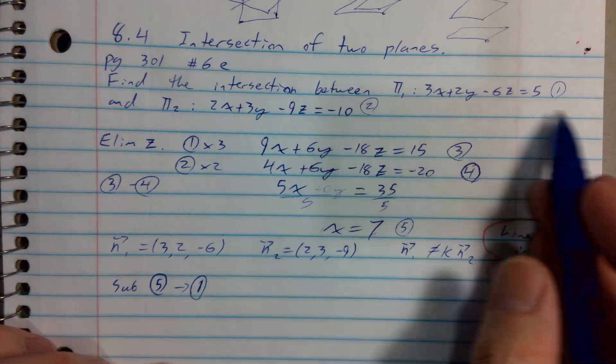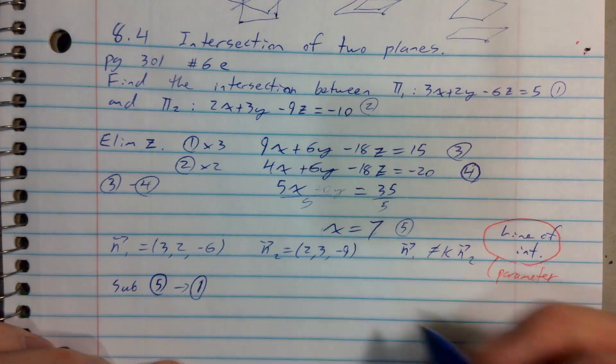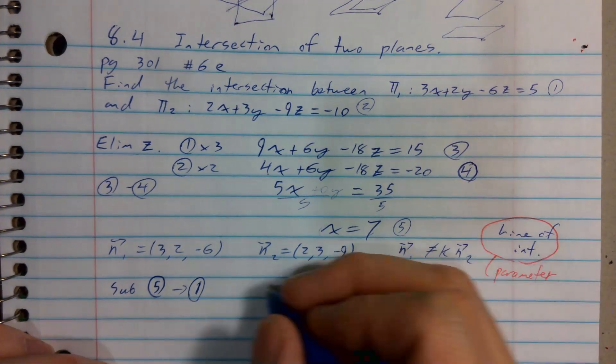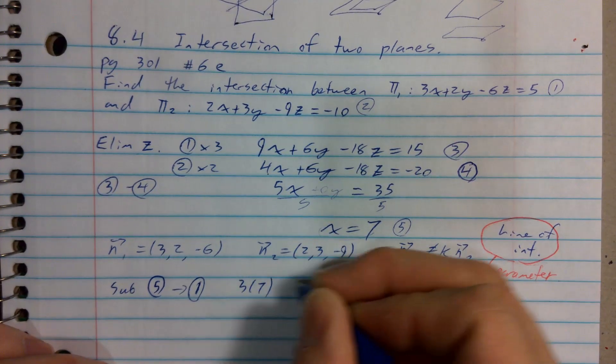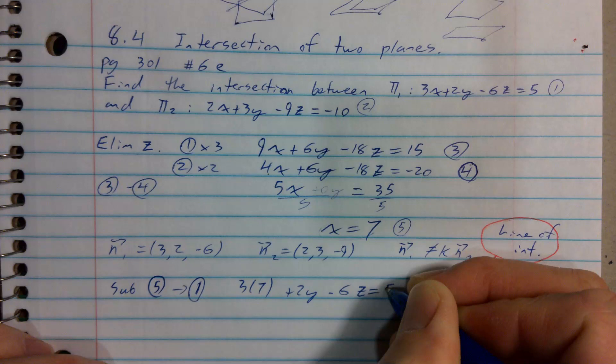Substituting statement 5 into 1 kind of feels like, oh, I'm on track to find the point of intersection, but that's silly. There can't be a point of intersection. Anyways, let's just pretend we're silly for a little bit.